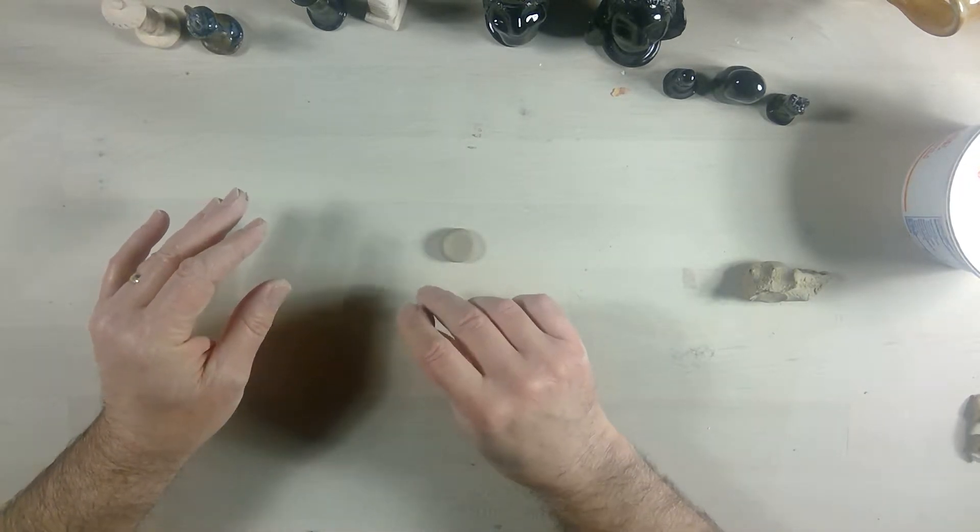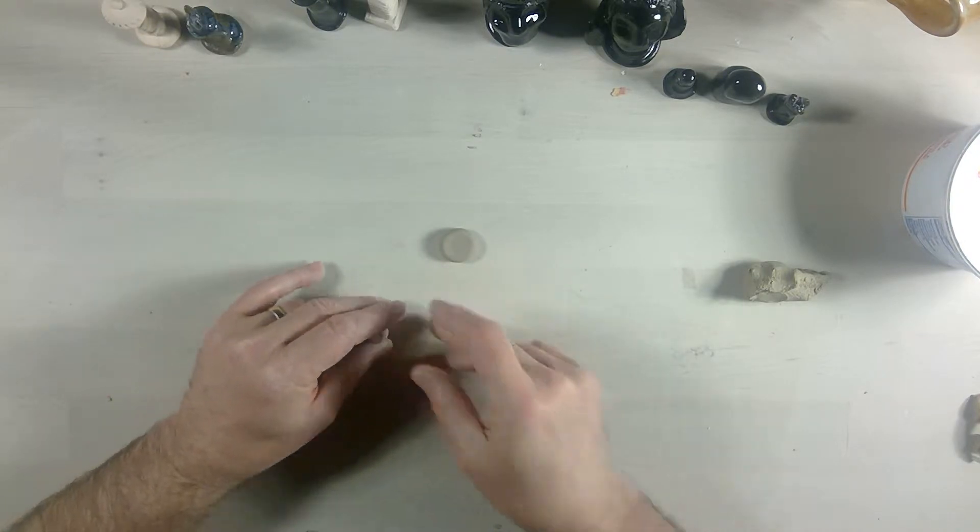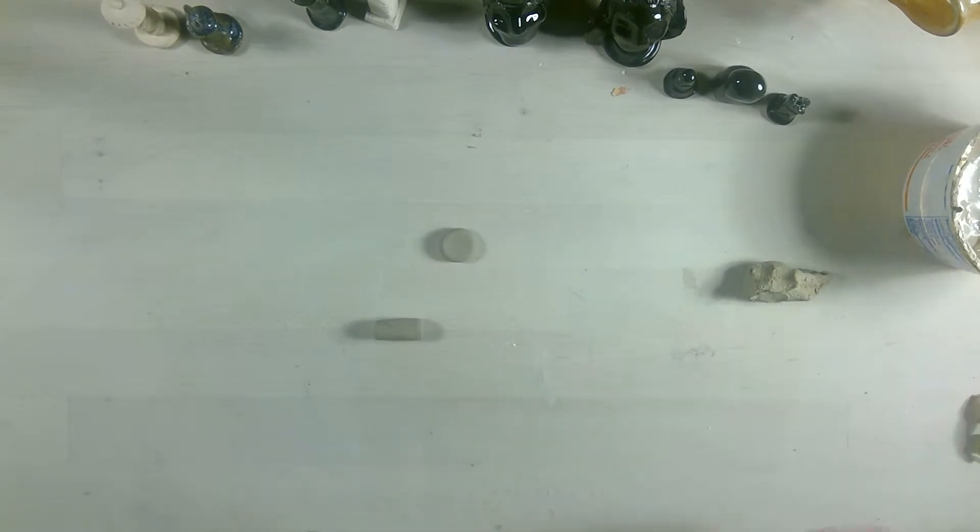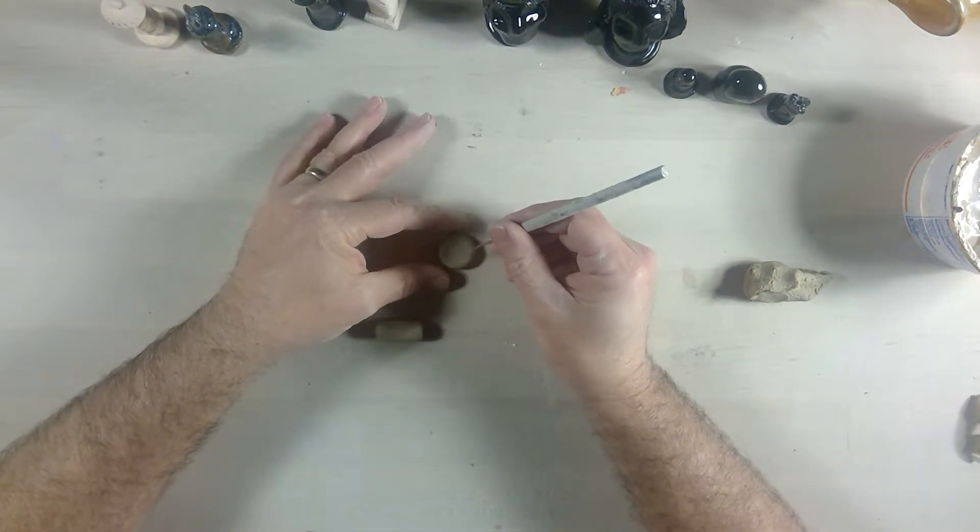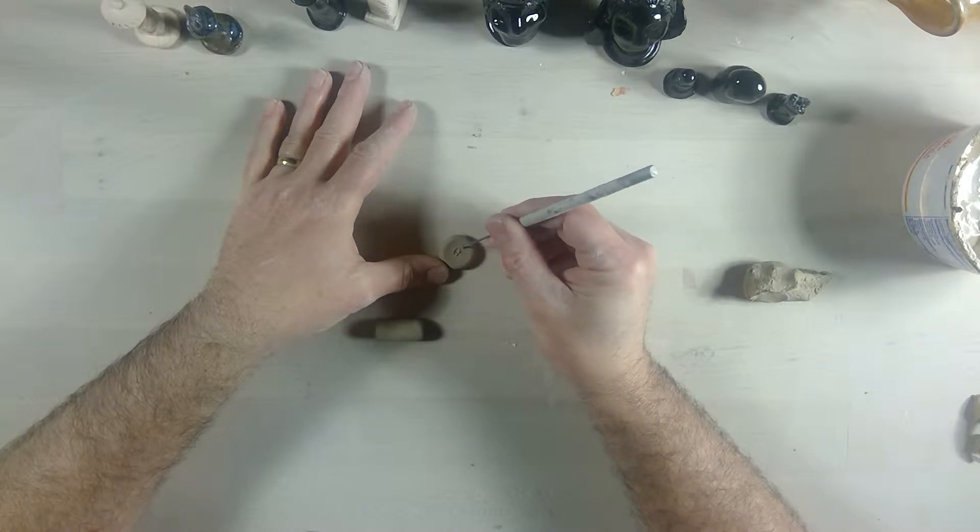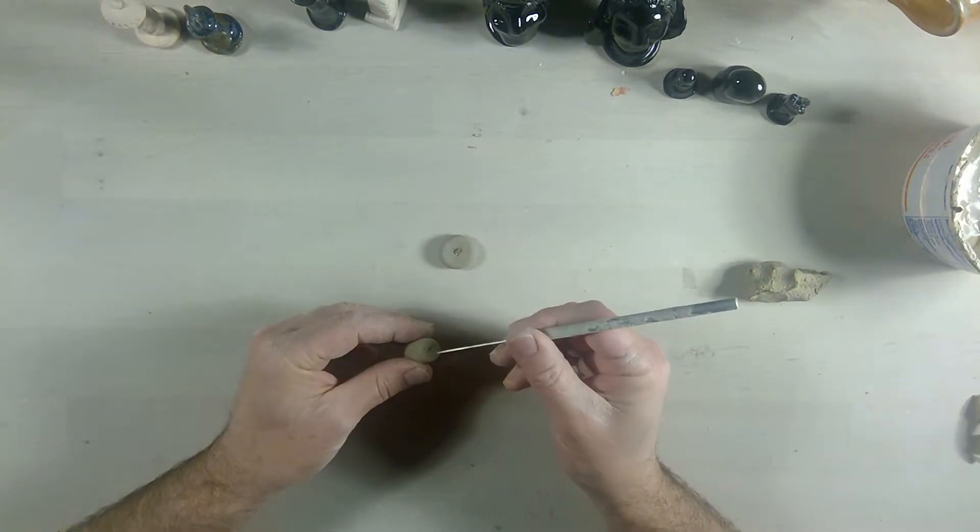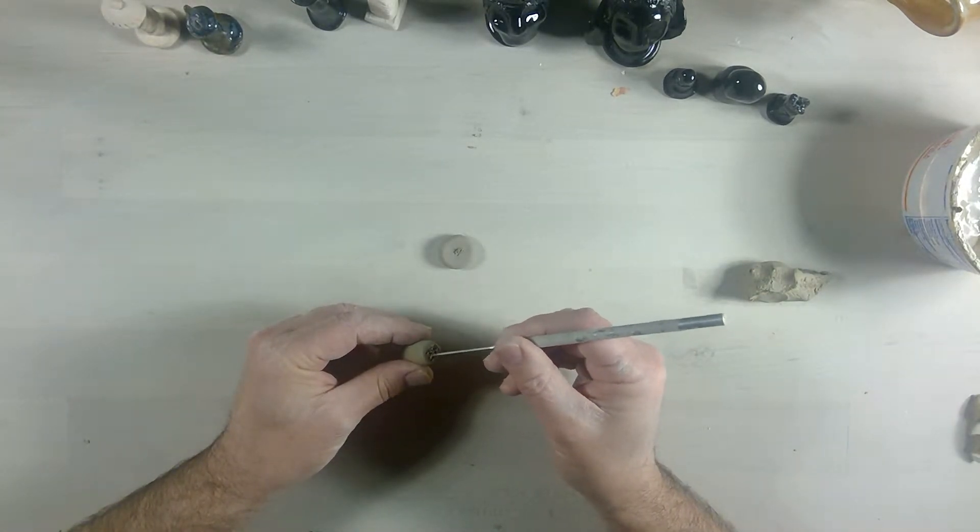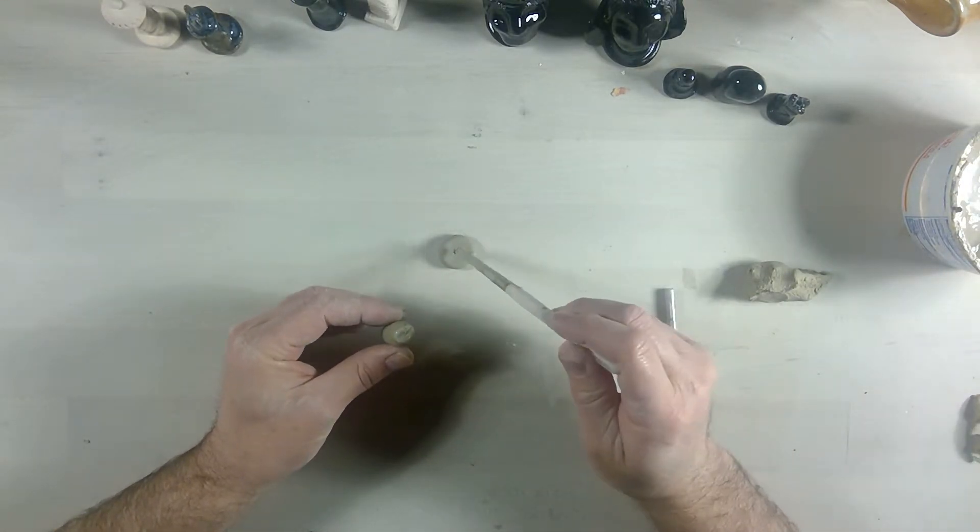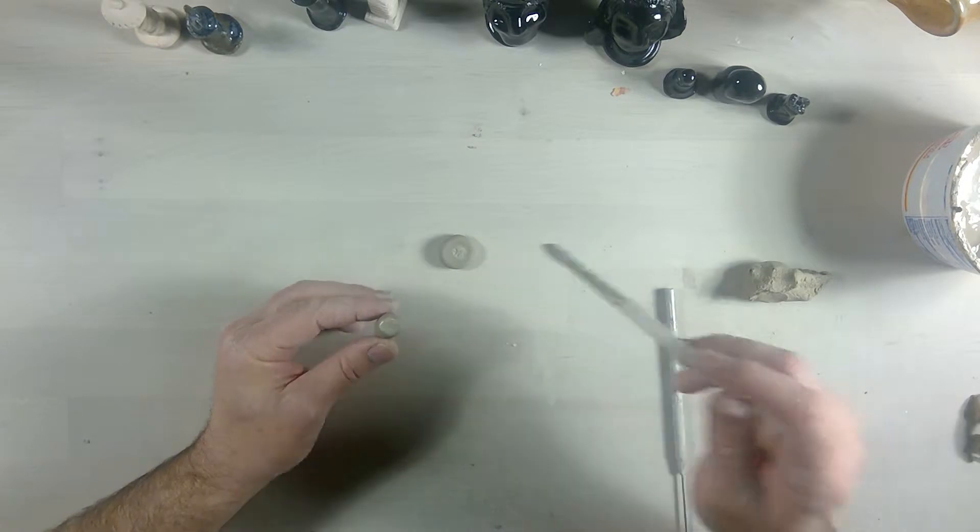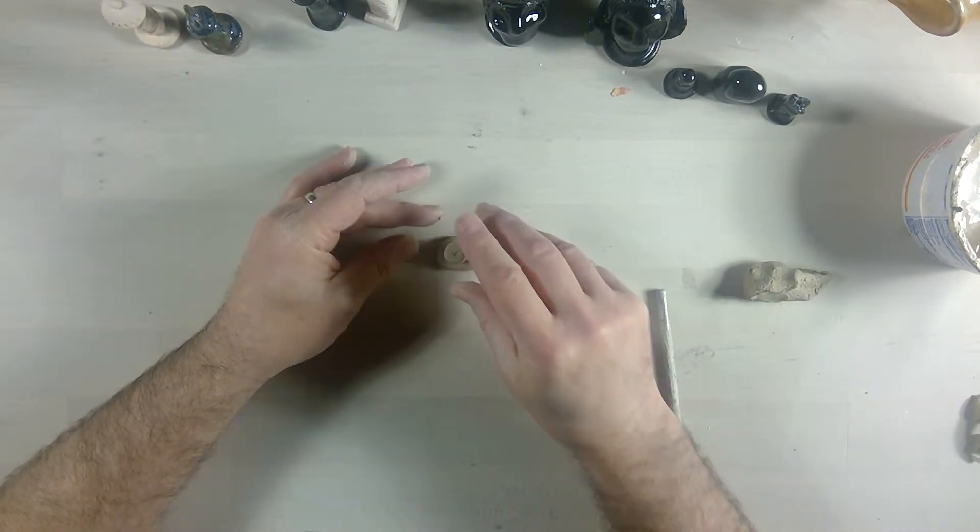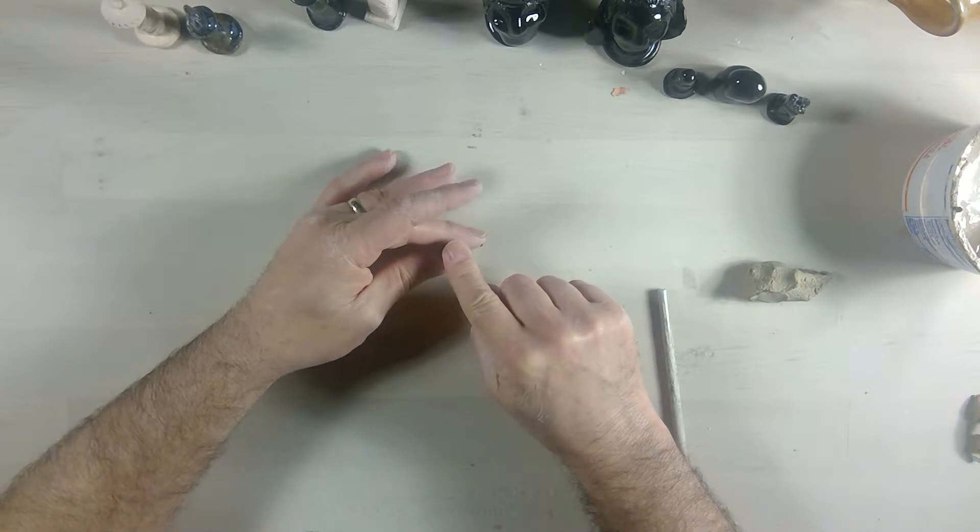Anytime you join things together, this is the other thing we're working on. Even if it's small, if you can just score the edges that are going to be joined. A little bit of slip, that's step number two. So scoring step number one, slip step number two, and then finally pressure step number three.